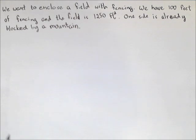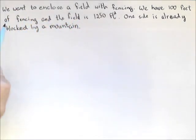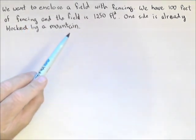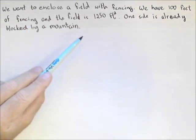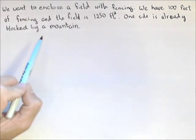Here's a nice application problem that you see often in both algebra and calculus. We want to enclose a field with some fencing, and we have 100 feet of fencing to do it with. The field is supposed to be 1,250 square feet. One side is already blocked by a mountain.